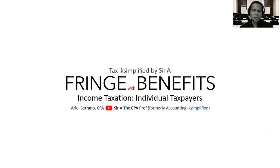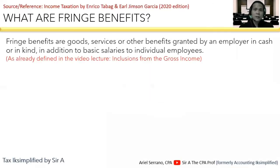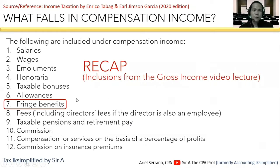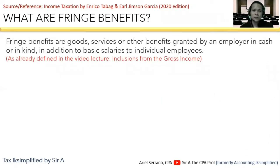This topic is connected with the other topics. I have already discussed fringe benefits as part of our discussion on inclusions from the gross income. It falls as part of compensation income. In terms of the definition, fringe benefits are goods, services, or other benefits granted by an employer in the form of cash or non-cash.